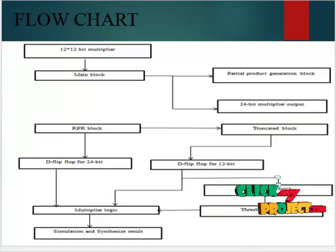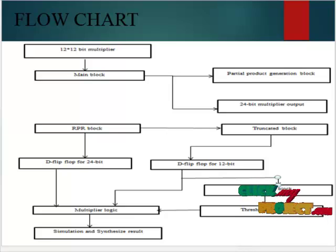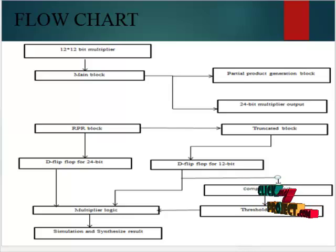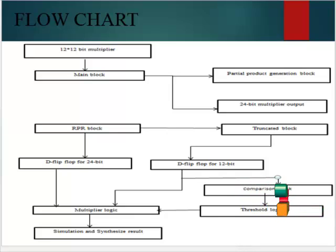Let us see our process flow diagram. We have given the 12-by-12-bit multiplier input functions and go into the main blocks. In the main blocks, the 24-bit multiplier operations will be performed, using basic gate logic as the first design.